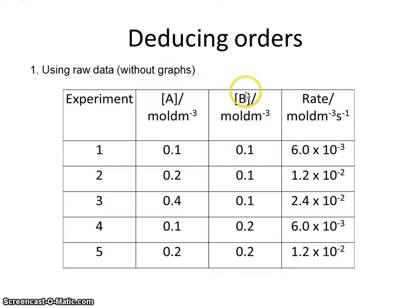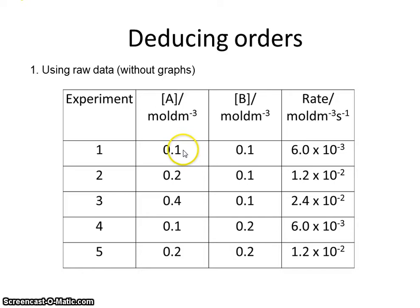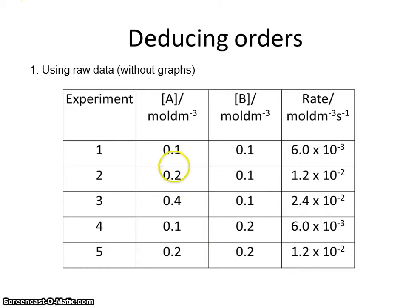We have two different reagents, each of which may affect the rate of a particular reaction, and we've measured rates in five different experiments. In experiments one, two and three, the concentration of A has changed while that of B has remained the same. This enables us to deduce the effect of changing the concentration of A on the rate of reaction. Pause the video and work out the order of the reaction with respect to A.